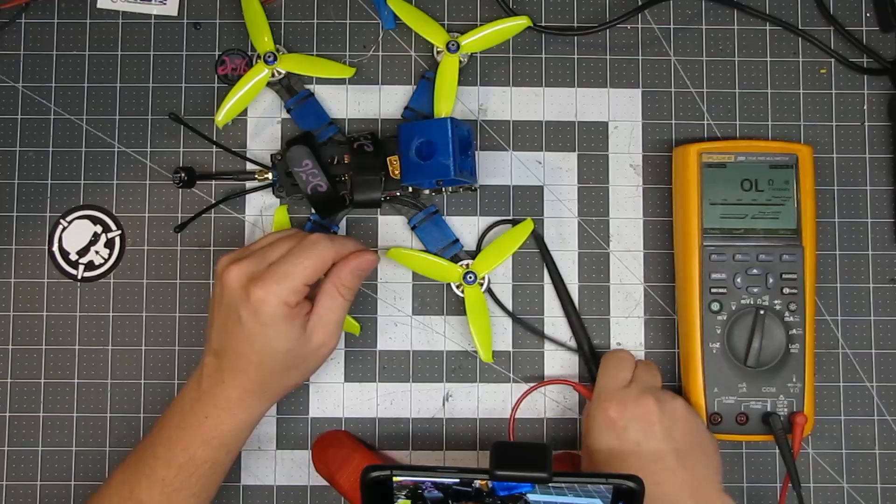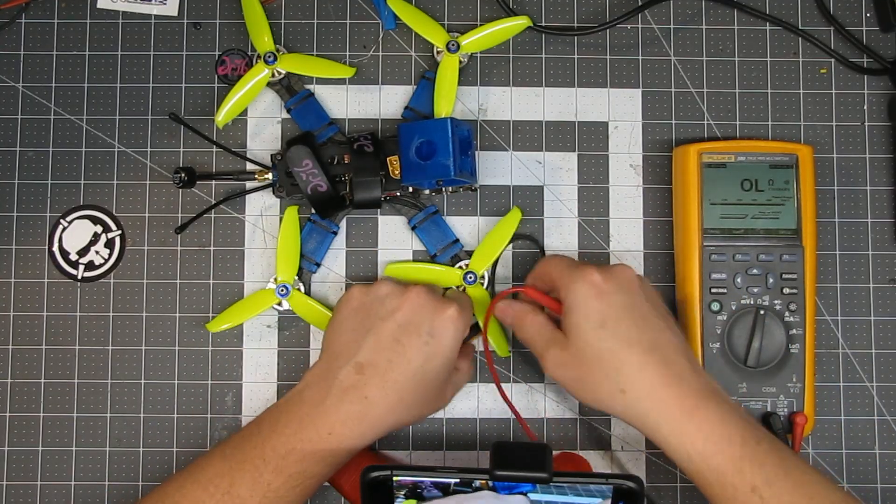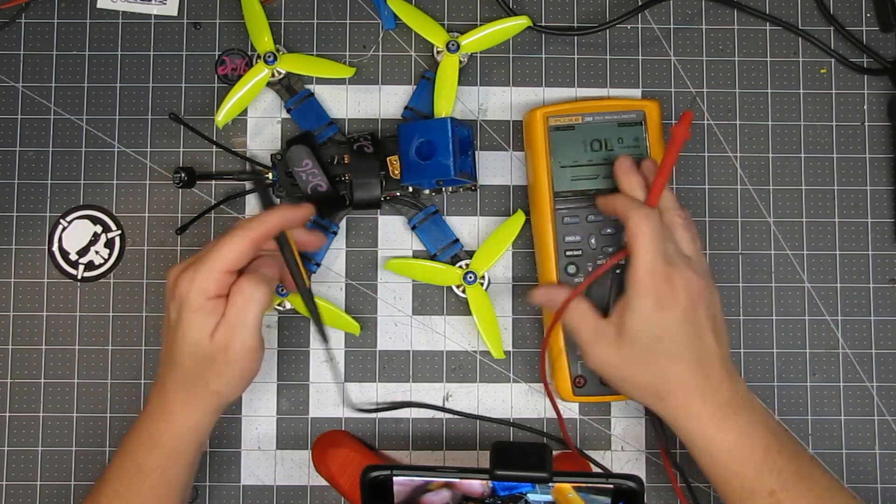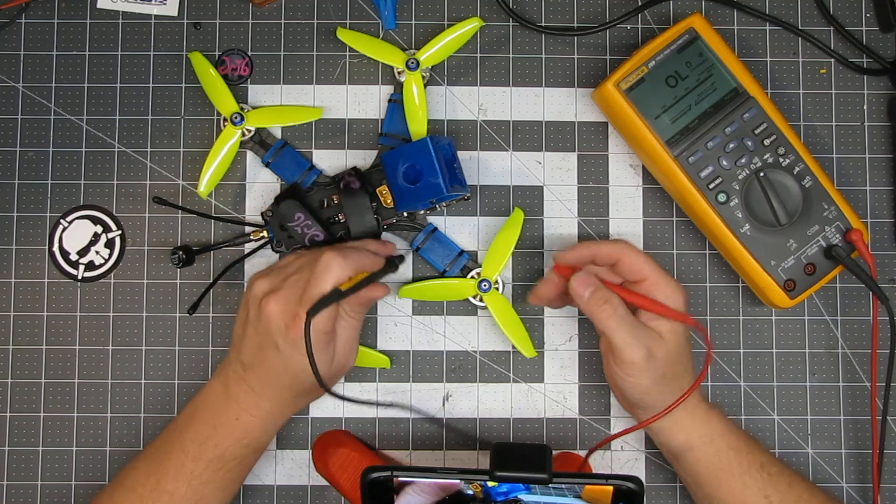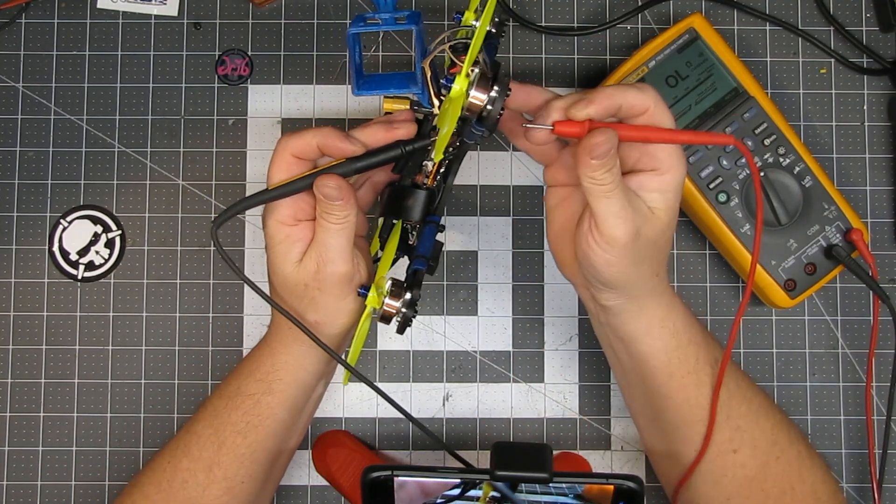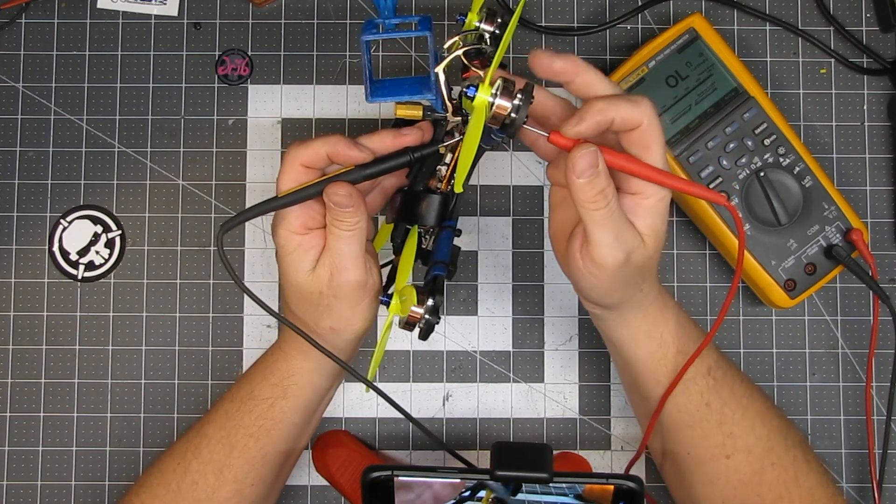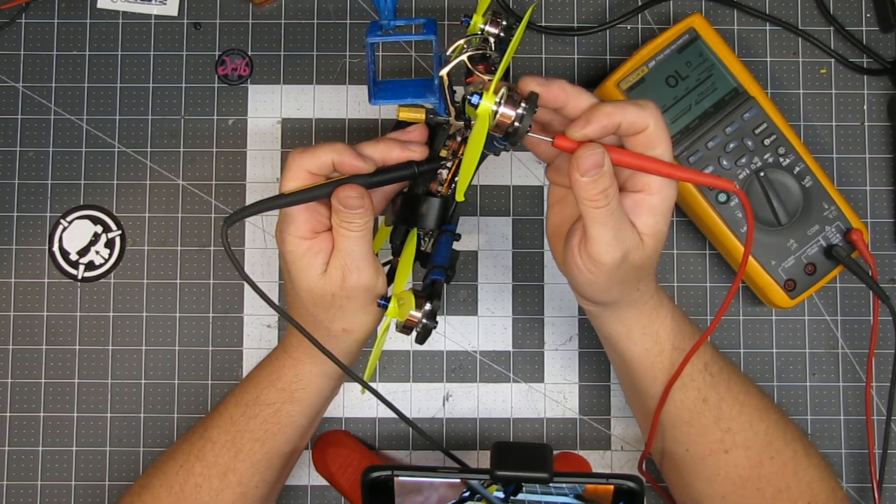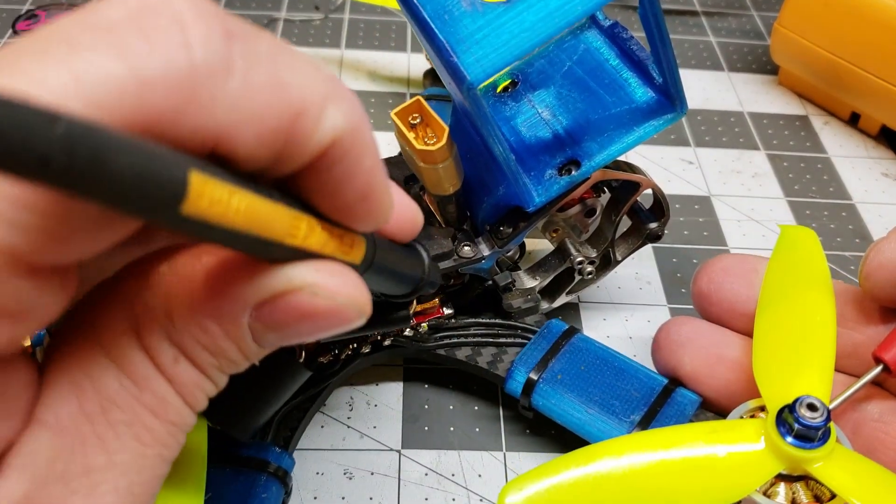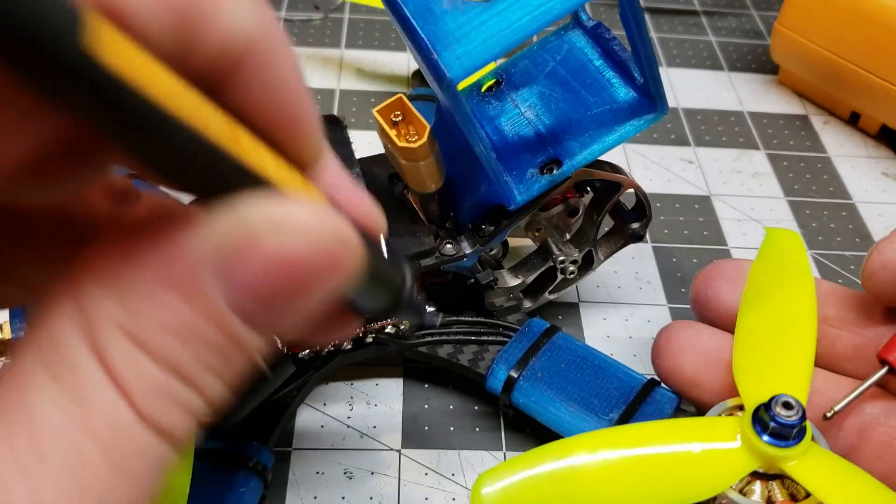So what we're gonna do to test this is take your leads, make sure you have it on the continuity setting to where it beeps. And what you're gonna do is you're just gonna take the screws. The best way to do this is with the screws to make sure that you touch. What we're going to do is we're just going to touch a pad on the ESC to your motors are soldered to.